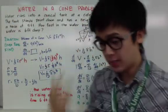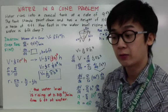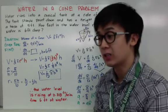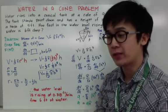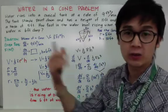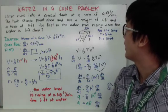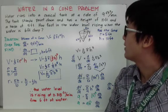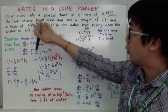Itong susunod naman ating word problem: water in a cone problem. Lagi din tayong makaka-encounter ng cone problem doon sa related rates. Ito yung isa sa mga example ng pag-solve ng word problems involving a tank na conical cone tapos tumataas yung tubig, ano yung rate ng pag-taas ng tubig. Kaya exciting ang pag-solve ng word problem sa calculus dahil mas dynamic siya — hindi na lang siya anong sukat ng cone, anong area ng cone, anong volume ng cone. Dito sa word problem ito: the water runs into a conical tank at a rate of 9 cubic feet per minute. The tank stands point down and has a height of 10 feet and a base of 5 feet. How fast is the water level rising when the water is 6 feet deep?